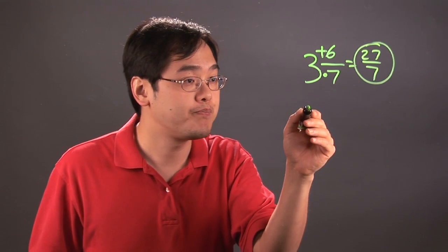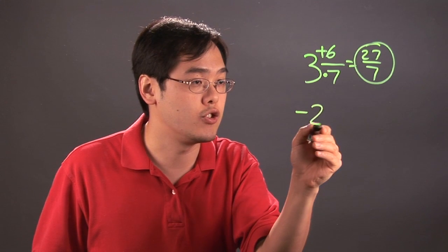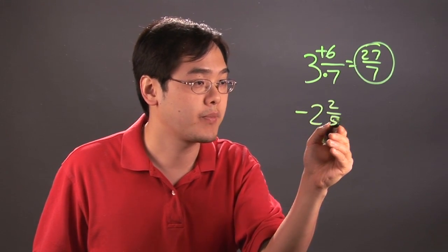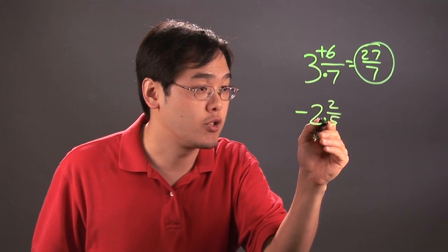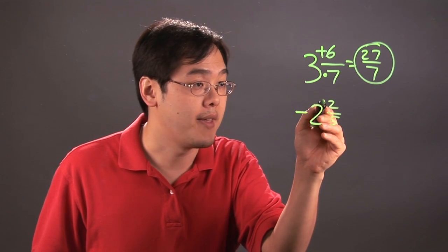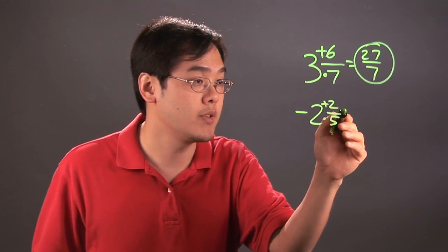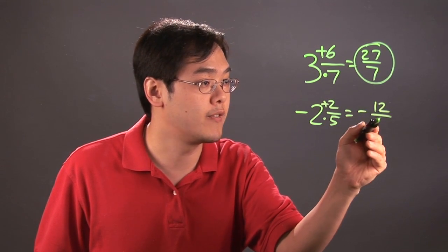Now if you wanted to look at negative 2 and 2 fifths, again, if you want to convert that to an improper fraction and then reduce later, you can. 5 times 2 is going to give you 10, and then add the 2 is going to give you 12. So this is going to be negative 12 over 5.